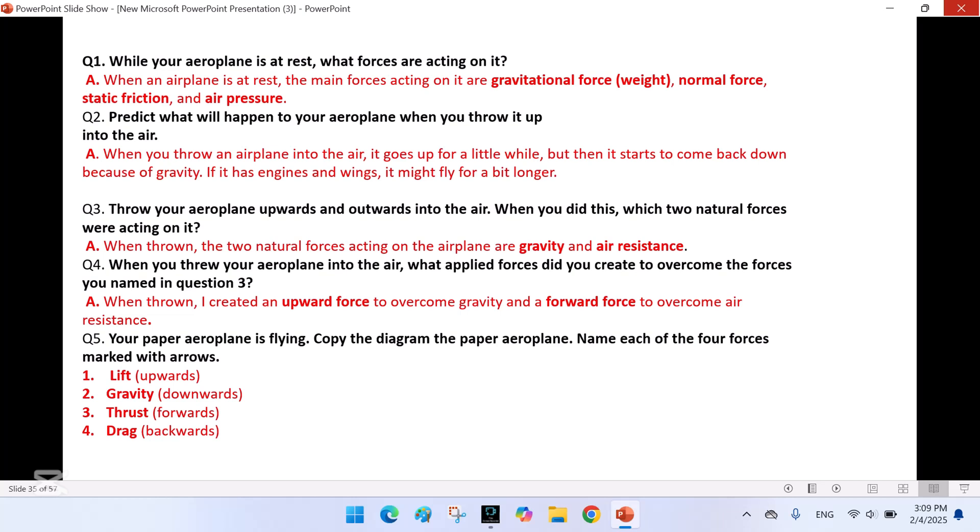When an aeroplane is at rest, the main forces acting on it are gravitational force, normal force, static force and air pressure. Predict what will happen to your aeroplane when you throw it up into the air. When you throw an aeroplane into the air, it goes up for a little while, but then it starts to come back down because of gravity. If it has engine and wings, it might fly for a bit longer. Throw your aeroplane upwards and outwards into the air. When you did this, which two natural forces were acting on it? When thrown, the two natural forces acting on the aeroplane are gravity and air resistance. When you threw your aeroplane into the air, what applied forces did you create to overcome the forces you named in question 3? When thrown, I created an upward force to overcome gravity and a forward force to overcome air resistance.